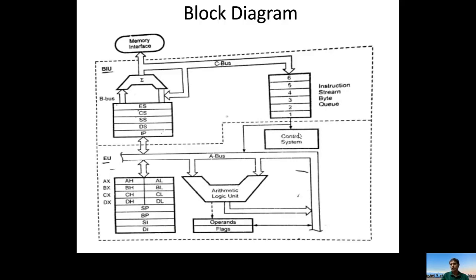The instruction from the queue enters the control system for decoding, checking whether it belongs to the instruction set. After checking, it enters the Execution Unit where it performs data transfer, arithmetic, or logical operations. The results and flags are moved back to the BIU via buses and segment registers, and the adder converts the 16-bit logical address into a 20-bit physical address. Based on that address, the data is transmitted through the Bus Interfacing Unit.